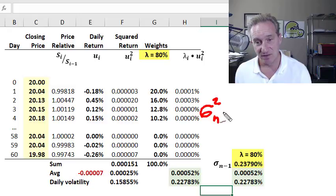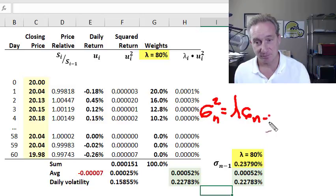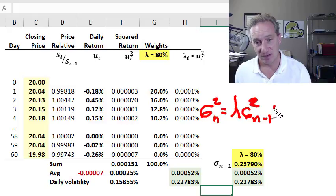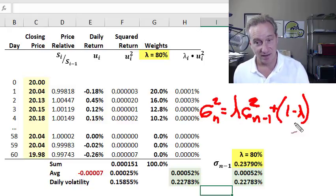The variance estimate under exponentially weighted moving average is going to be our lambda parameter multiplied by the variance estimate yesterday. So that's sigma sub n minus one squared. So that's why I say this is recursive. Our variance estimate is a function of yesterday's variance weighted by lambda. So we have one term that's weighted by lambda. And then we have another term. The remainder is one minus lambda. If we add these two weights together, we get 100% weight.